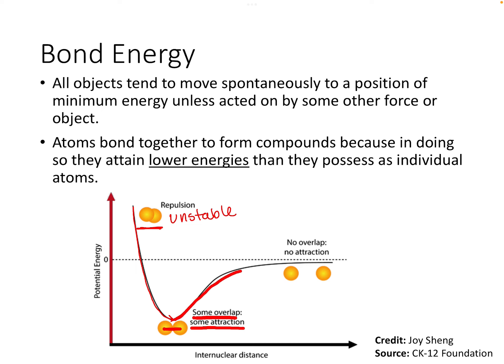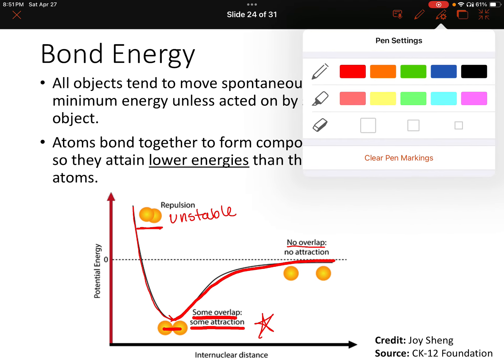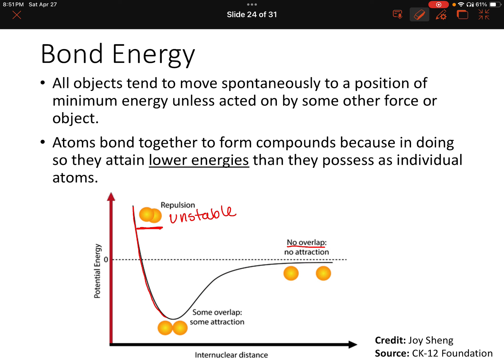On the right side of the diagram, we have atoms with no overlap — they're too far apart and still somewhat unstable. So we really want that minimum energy. If we put energy into a molecule that has multiple bonds, we can actually break those bonds and separate the molecule into individual atoms. So if we're at the bottom of this energy diagram with two atoms bonded together, adding energy can break those atoms apart.